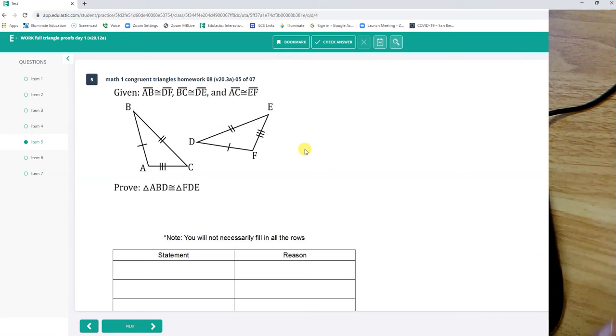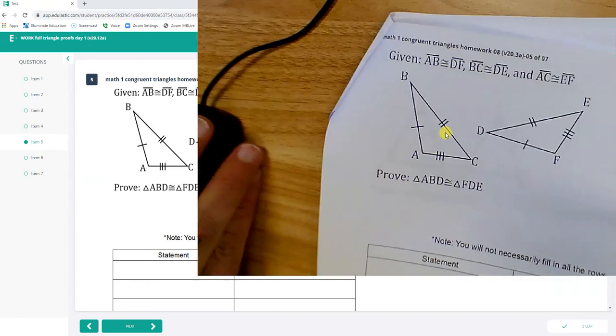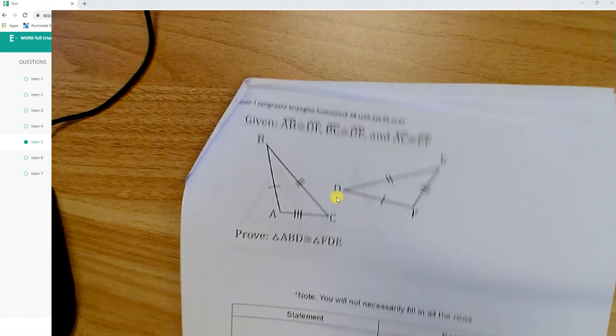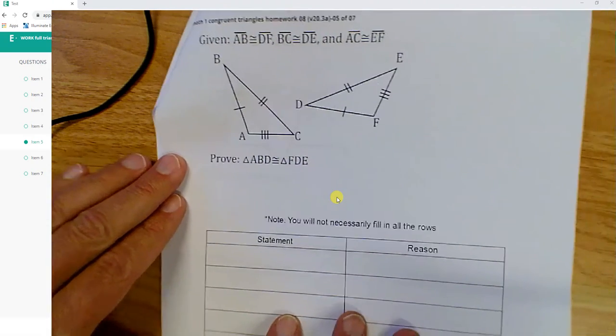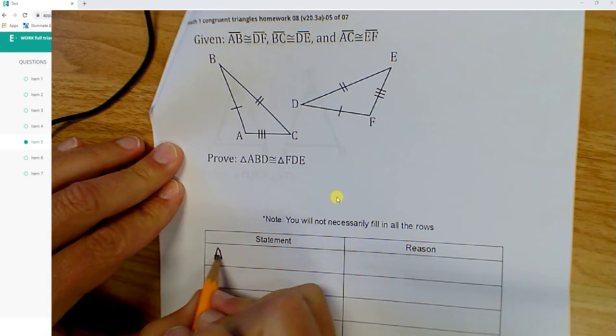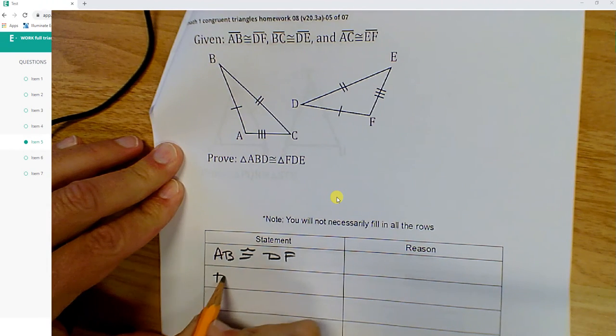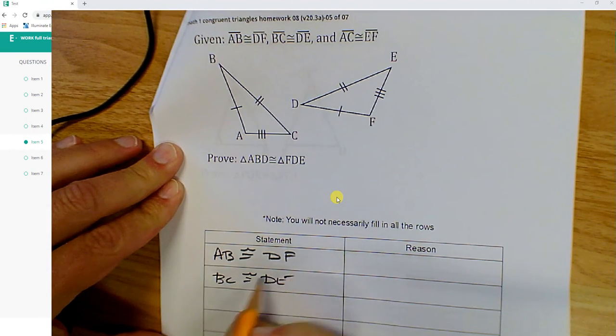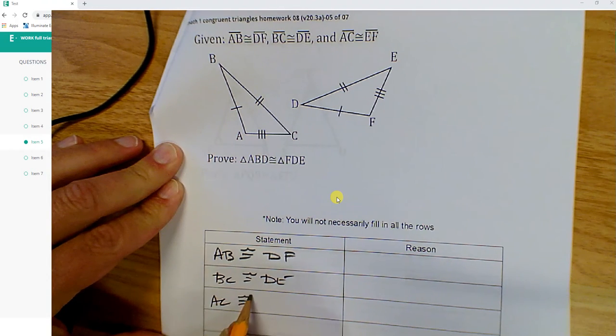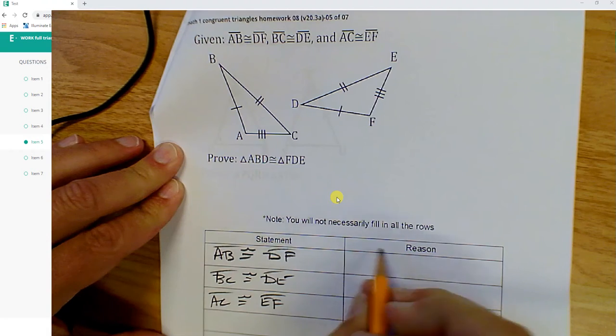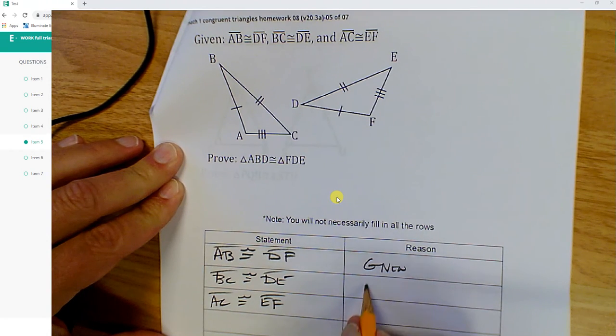Let's go to number five. Oh my goodness, I like this one. You're going to like this one too. Side, side, side. AB is congruent to DF, BC is congruent to DE, AC is congruent to EF. Given, given, given.